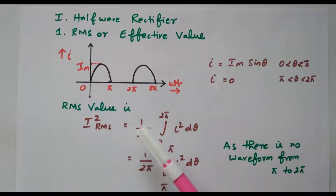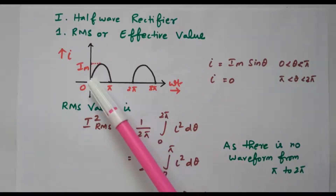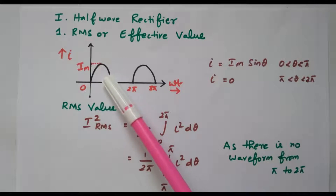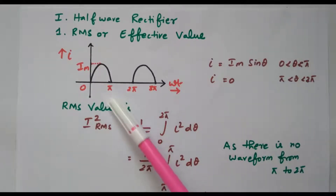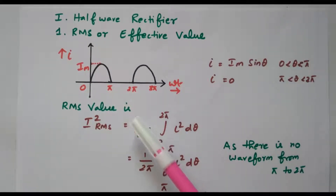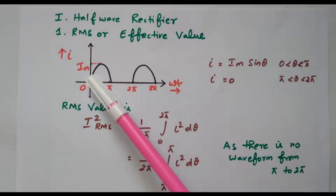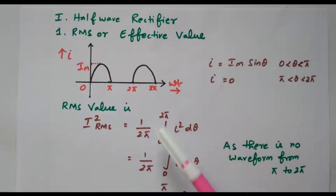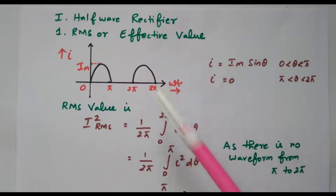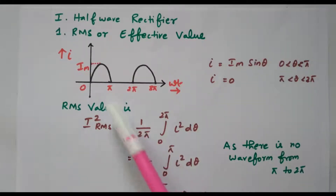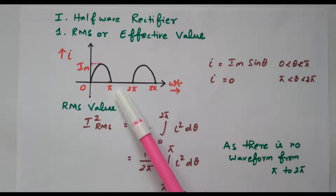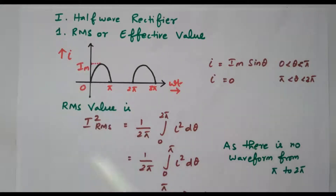In a half wave rectifier, during the positive half cycle the diode is forward biased so we get the positive voltage. During the negative half cycle the diode is reverse biased so there is no voltage available. So voltage is available only during the positive half cycle, from 0 to π. From π to 2π the current or voltage is 0.